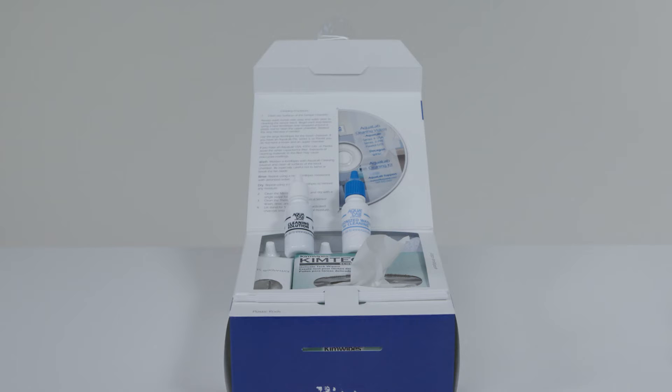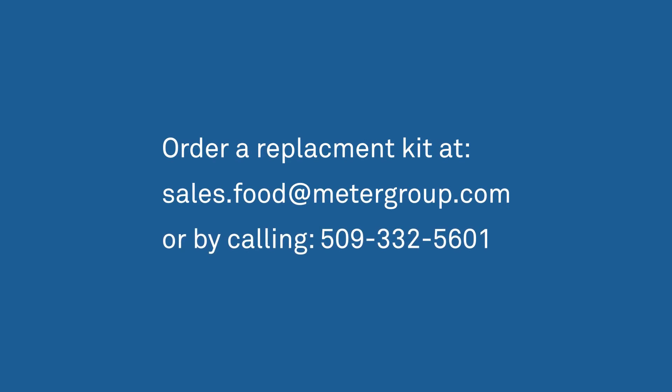To clean the instrument, use your Aqualab cleaning kit. One is included with your instrument. You will get a new kit after each annual calibration. Order a replacement kit at sales.food at metergroup.com or by calling 509-332-5601.